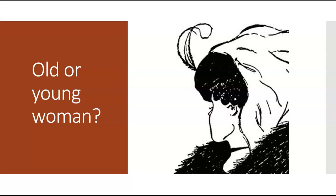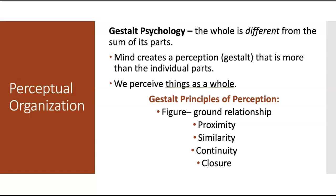However, with other things, we organize things in a more predictable manner. Like I said, this is ambiguous. Usually we're looking at things that are less ambiguous. And we have this tendency to organize things in a certain way. And that's what we'll be looking at.